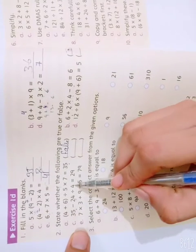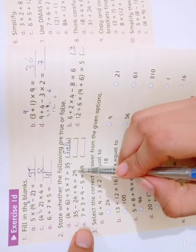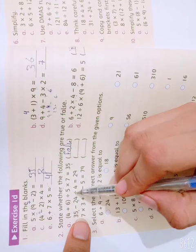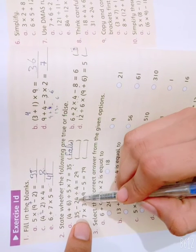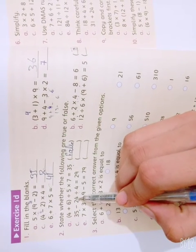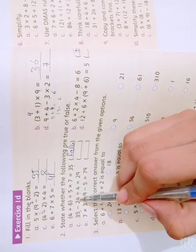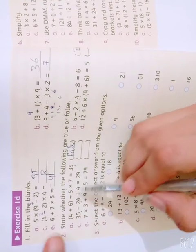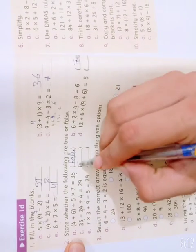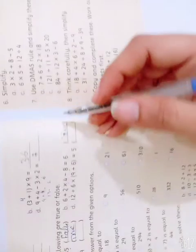Question number C: 35 minus 24 divided by 4, and its answer is 29. We will divide by using BODMAS rule. 24 divided by 4 is 6. We will minus 6 from 35, so it will be 29. It means it's a true statement.